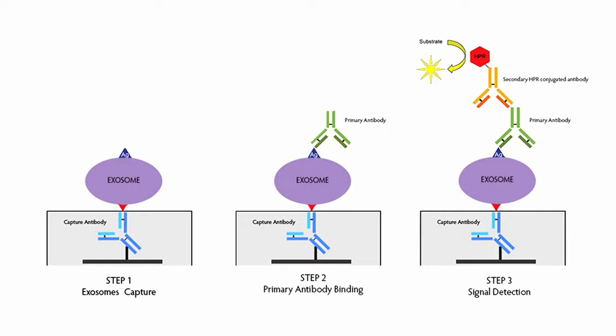In ExoTest, exosomes are captured by specific antibodies against exosome-restricted antigens, which are coated onto the plate, and then exosomes are detected by primary antibodies against exosomal surface markers.